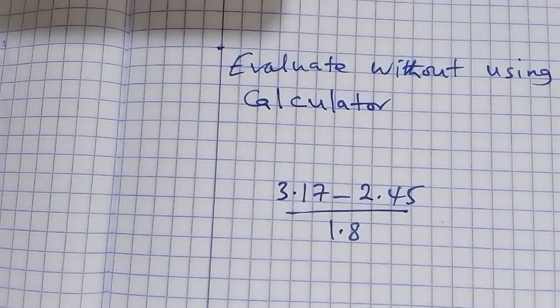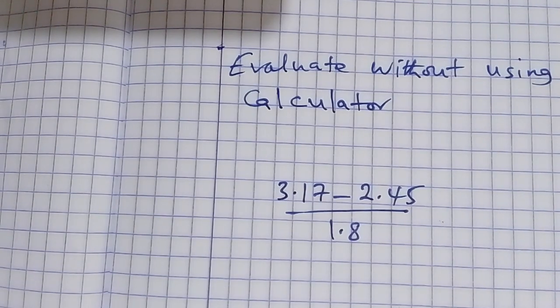Evaluate without using calculator. 3.17 minus 2.45 over 1.8.